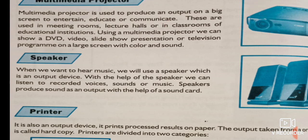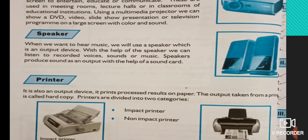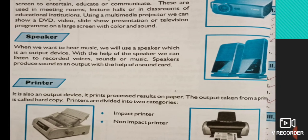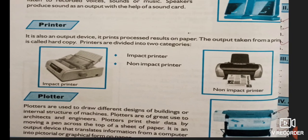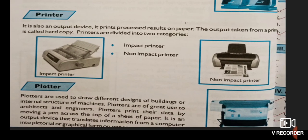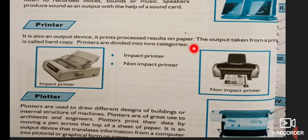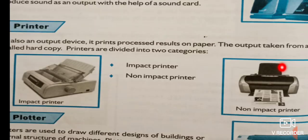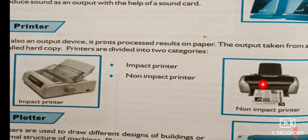Speakers are also an output device. We can attach a speaker to a computer for hearing any kind of sounds, voices, and music. The next important and commonly used output device is the printer, which prints the processed results on paper. There are two types of printers — impact printers, which are an older form, and non-impact printers, which mostly resemble a Xerox machine and are used more commonly today.